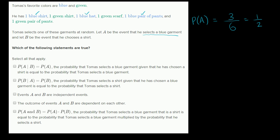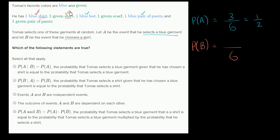What's the probability of B? B is the event that he chooses a shirt. There are six possible items as equally likely outcomes, and two of them involve picking a shirt. So the probability of B is equal to 2/6, or one third.